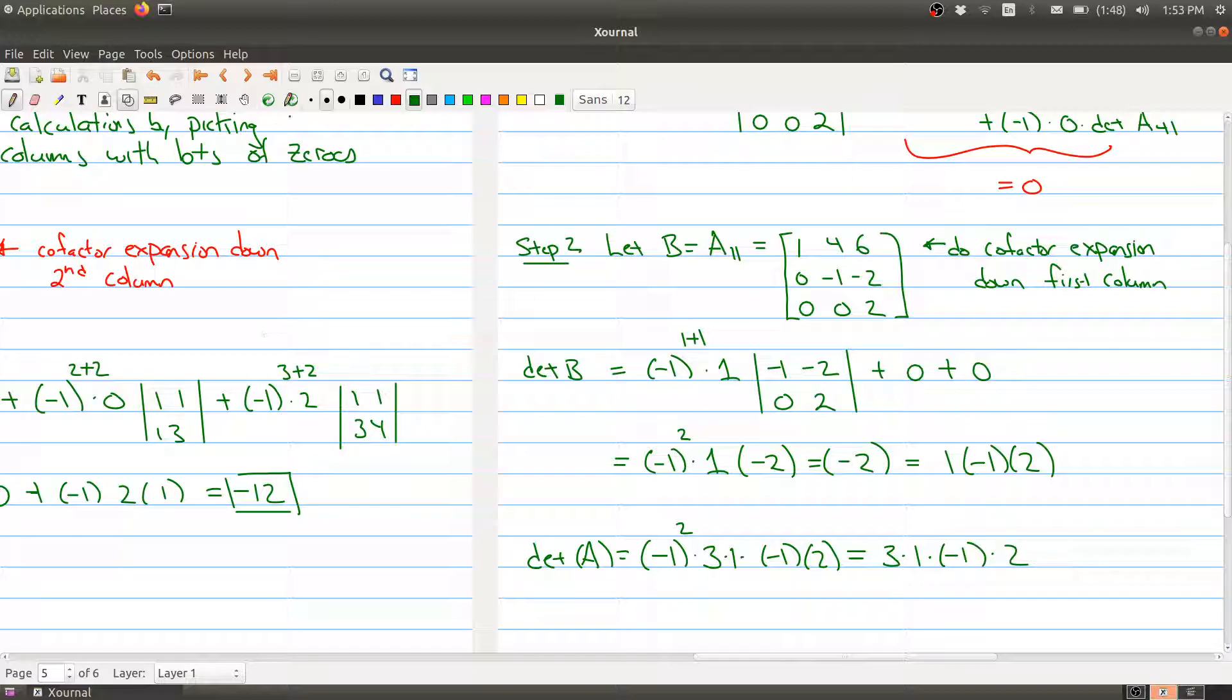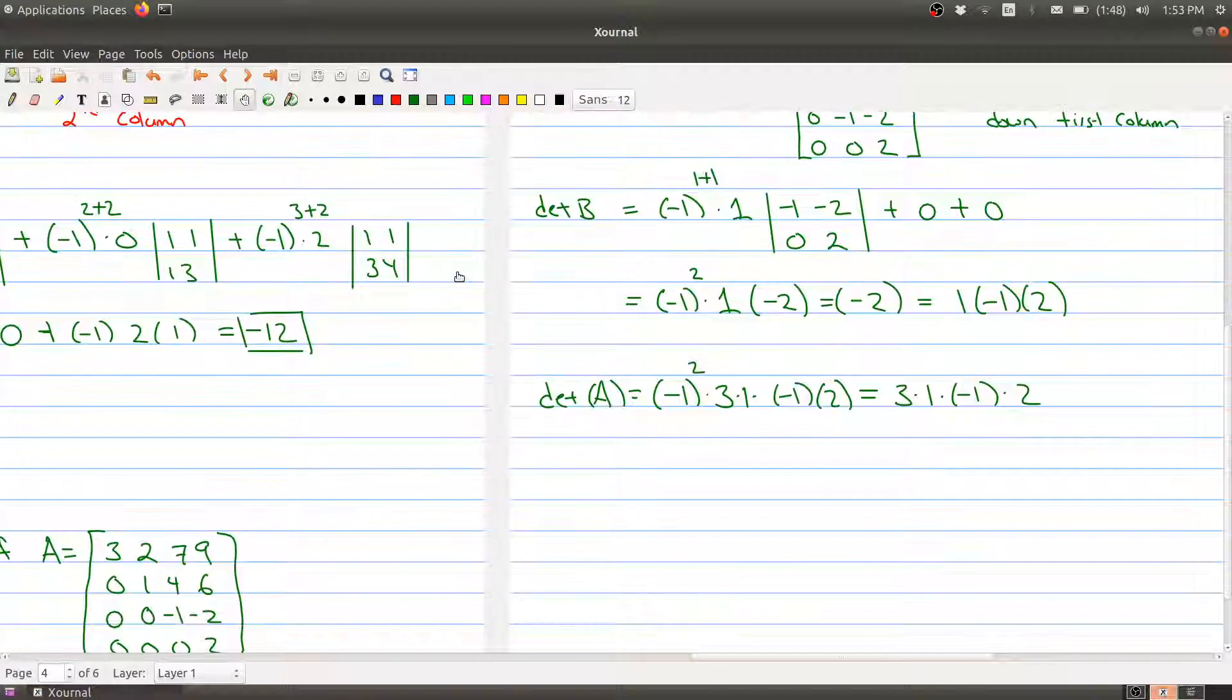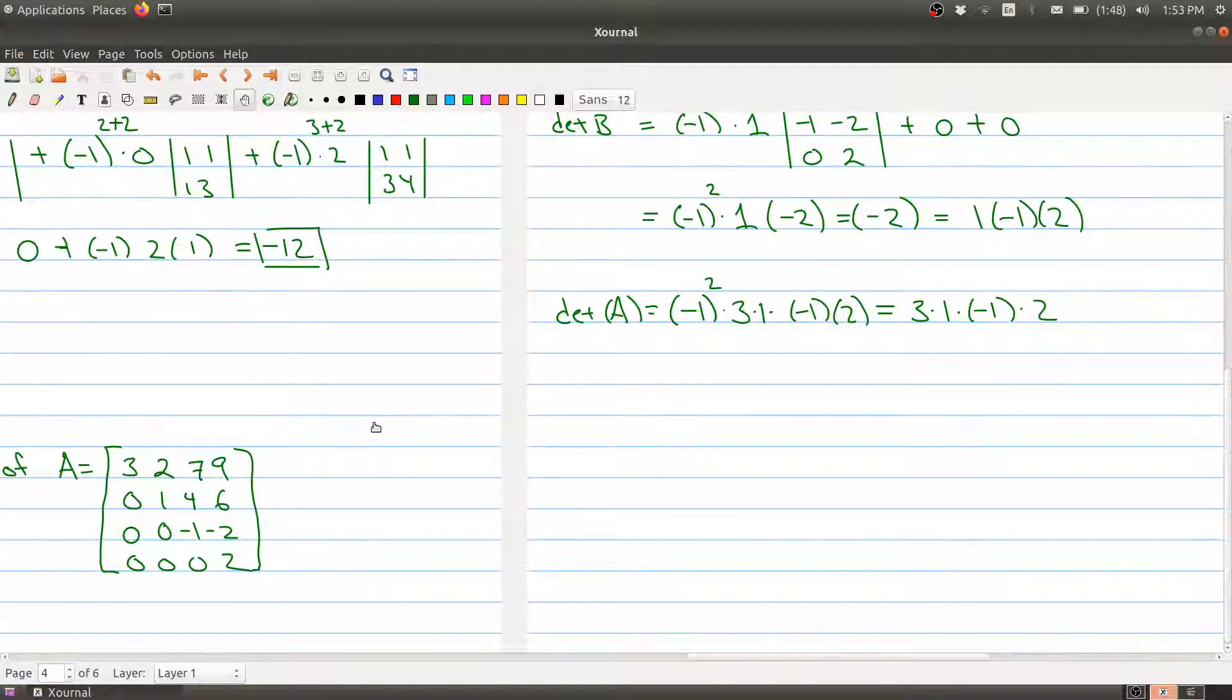So the determinant of this matrix is given by this value right here, and if you stare at it for a second you'll notice some very nice things happening: you have a 3, 3, 1, 1, -1, -1, 2 and 2. So is this a coincidence?